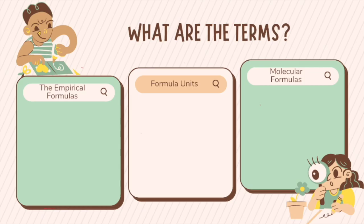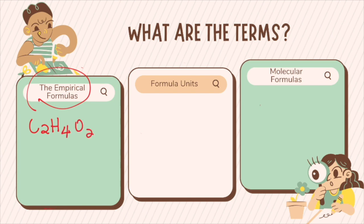Now, how do empirical formulas differ from formula units and molecular formulas? Empirical formulas are expressed as the smallest possible whole number ratios of the elements in compounds. The ratios of elements in empirical formulas are discovered through laboratory experimentation. For example, the compound C2H4O2, which is acetic acid — if all the subscripts are reduced to the smallest ratio by dividing by 2, you will have CH2O.